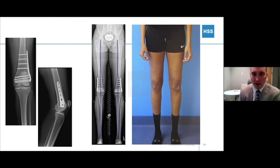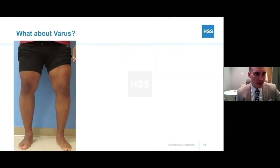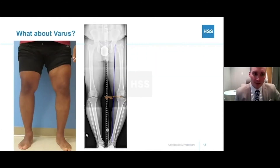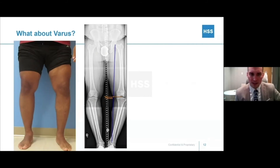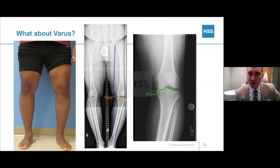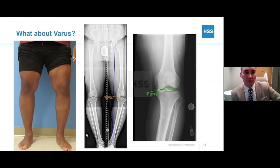Now her medial and lateral condyles will equally share weight, which will be better for her long-term health. What about varus? Can we use osteotomies around the knee to correct varus? Of course we can. This patient's mechanical axis is much more medial. He also has joint line obliquity, which is often a forgotten source of mechanical axis deviation in the lower extremities, and this must be accounted for when planning his deformity correction.